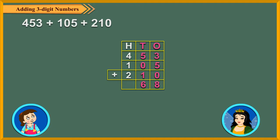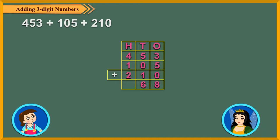Finally, we add the hundreds digits. 4 hundreds plus 1 hundred plus 2 hundreds equal to 7 hundreds.